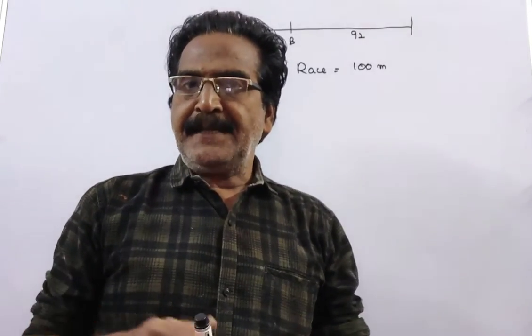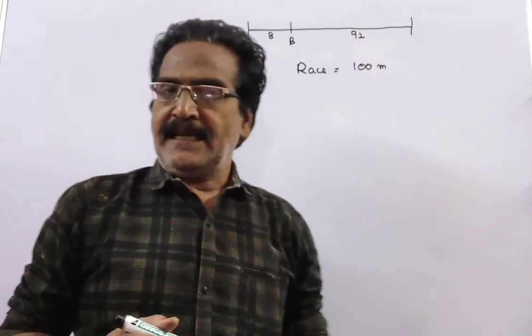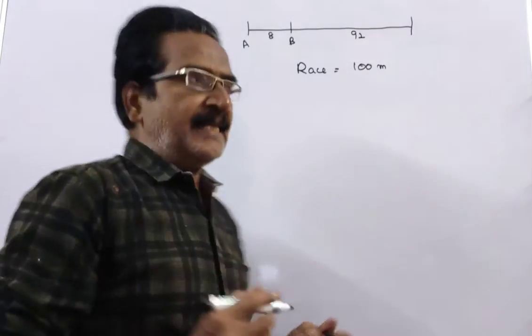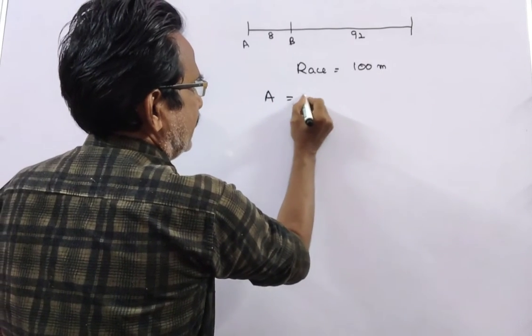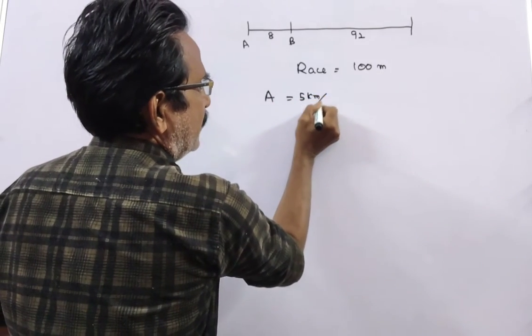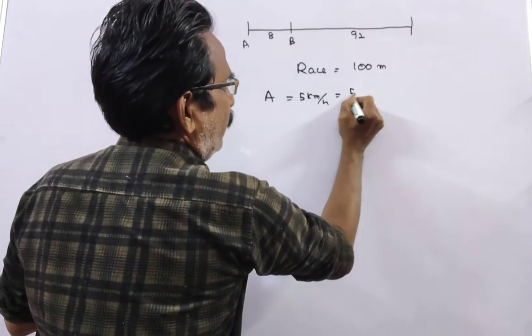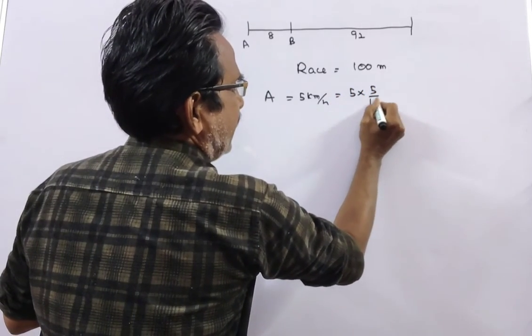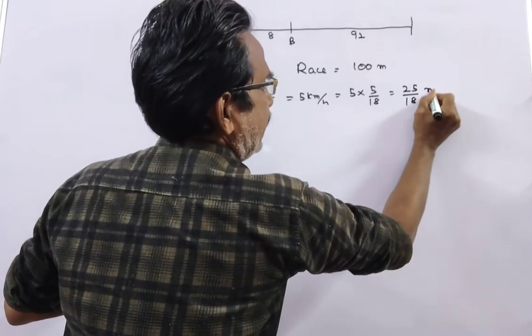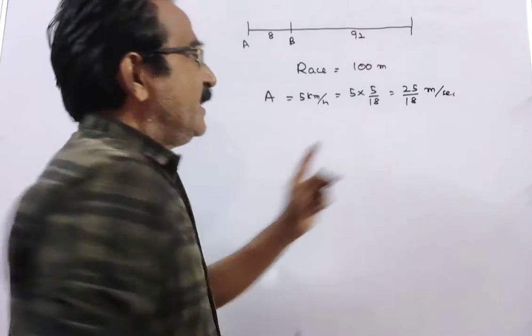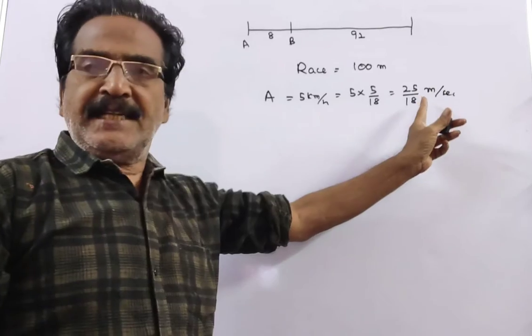See friends, A and B take part in a 100 meters race. A runs at 5 kmph. That is equal to 5 into 5 by 18, that is equal to 25 by 18 meters per second. This is the speed of A.